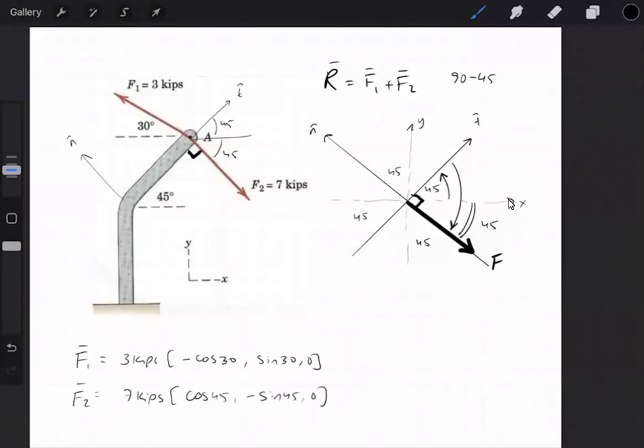Zero for the z component. Simplifying these down gets us negative 2.598 and 1.50 kips, and the F2 is 4.95 and negative 4.95 kips.